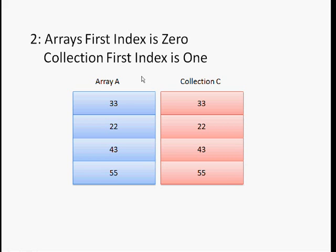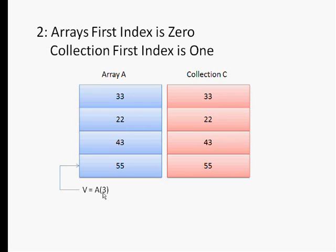If you remember from last tutorial, the index for this element is 0, this one is 1, this one is 2, and 3. So if you write something like v equals a of 3, it will point to here instead of here because we started with 0. And if you write something like v equals a of 1, it will point to the 22.